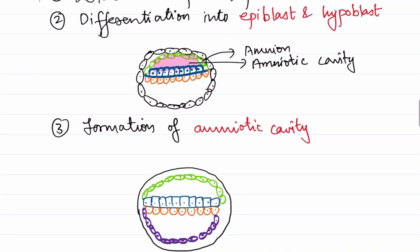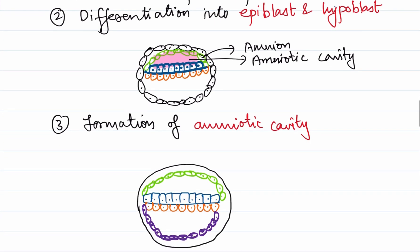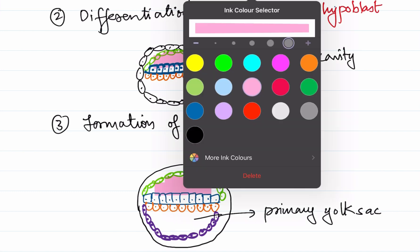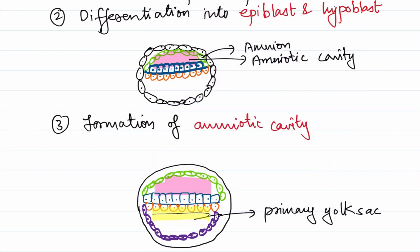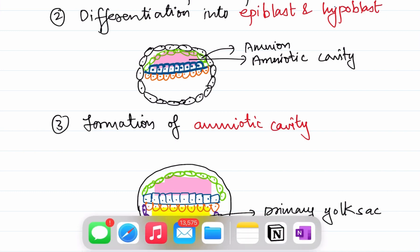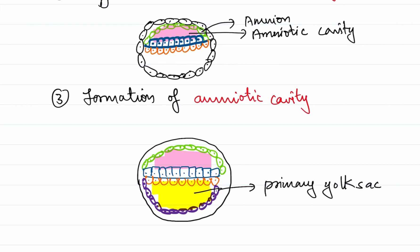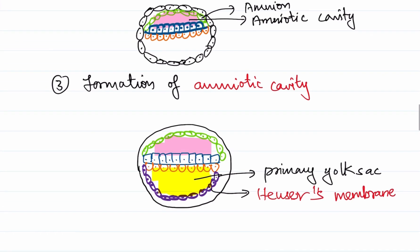After the formation of the amniotic cavity above, the cytotrophoblastic cells give rise to another set of cells present below the hypoblast, which enclose a cavity between them. This cavity is what we call the primary yolk sac. So we have the amniotic cavity above and the primary yolk sac below. The membrane derived from the cytotrophoblast which surrounds the primary yolk sac is called Heuser's membrane.